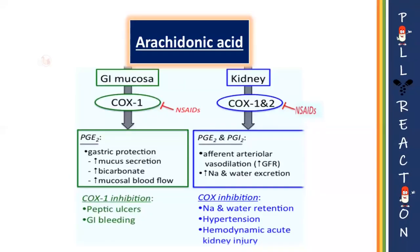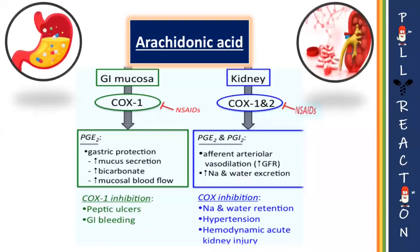Prostanoids are synthesized from arachidonic acid by either COX-1 or COX-2 enzymes, which play an important role in maintaining homeostasis — that is, the normal physiological condition. Prostanoids are also synthesized through the same precursor arachidonic acid pathway.